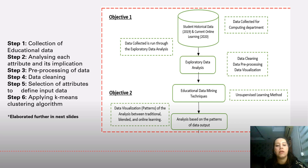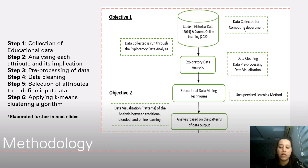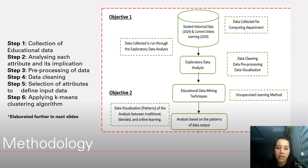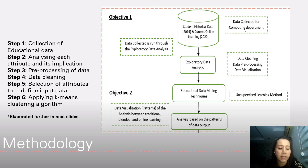Moving on to methodology. This research methodology has adopted the approach used by Bahrara 2018. We have two objectives to fulfill: first, to analyze and compare students' performance during traditional, blended, and online learning methods through EDM techniques; and second, to identify the patterns of students' academic performance using EDM techniques. These are broken down into six steps: step one — collection of educational data; step two — analyzing each attribute and its implications; step three — preprocessing of data; step four — data cleaning; step five — selection of attributes to define input data; step six — applying the K-means clustering algorithm. These will be further elaborated in the next slides.